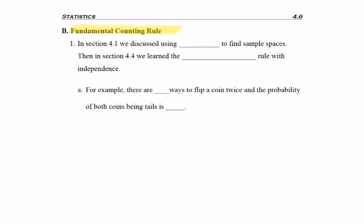So let's go ahead and look at the fundamental counting rule, but first a lead in. In section 4.1, we discussed using trees to find sample spaces. Then, in section 4.4, we learned the multiplication rule with independence for finding probability.